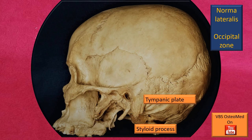The tympanic plate was discussed in relation to the anterior wall of the external acoustic meatus. Tracing it further down, this plate ends in a projection called the styloid process — it sheets the base of the styloid process. The lower arrow indicates the styloid process and the upper arrow indicates the tympanic plate.